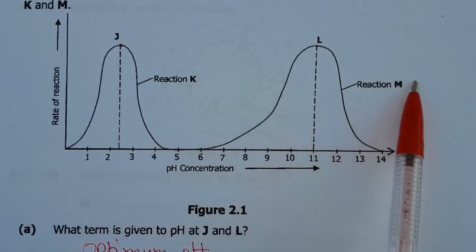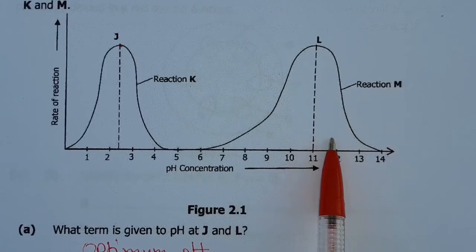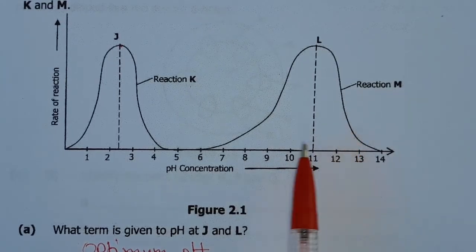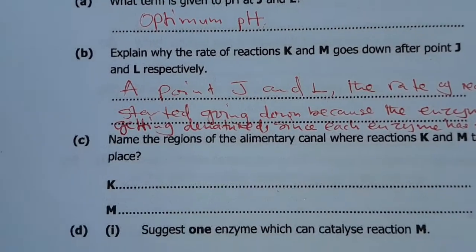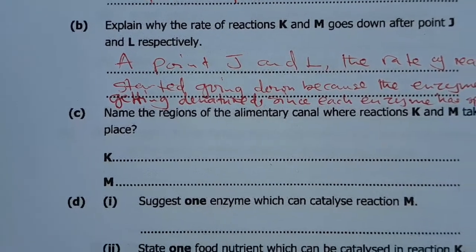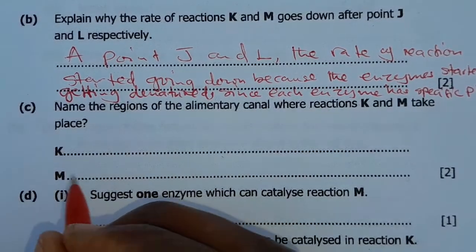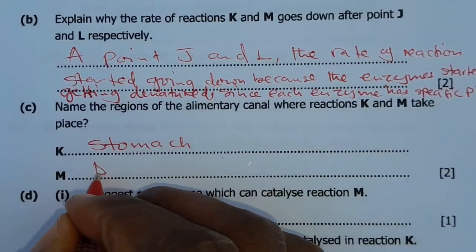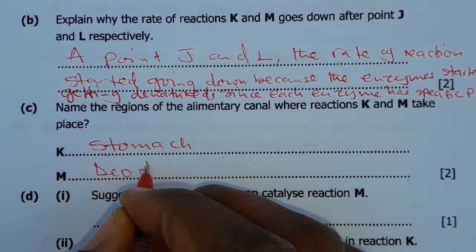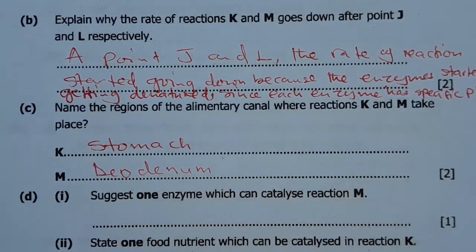And then reaction M, which is alkaline, this reaction takes place in the duodenum. So we are saying reaction K, which is in acidic state, takes place in the stomach. And here it's in the duodenum. So by this you get your two marks.